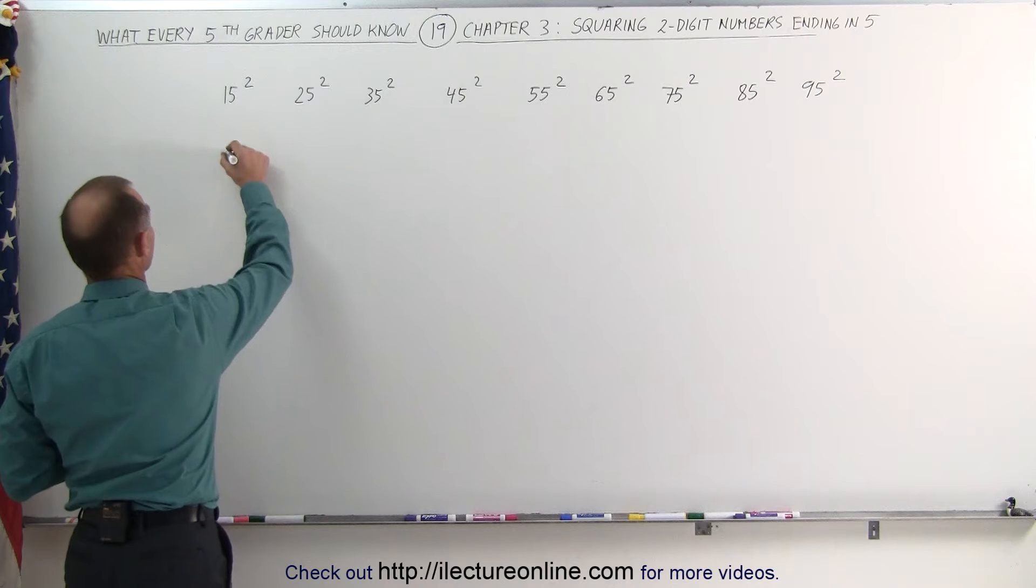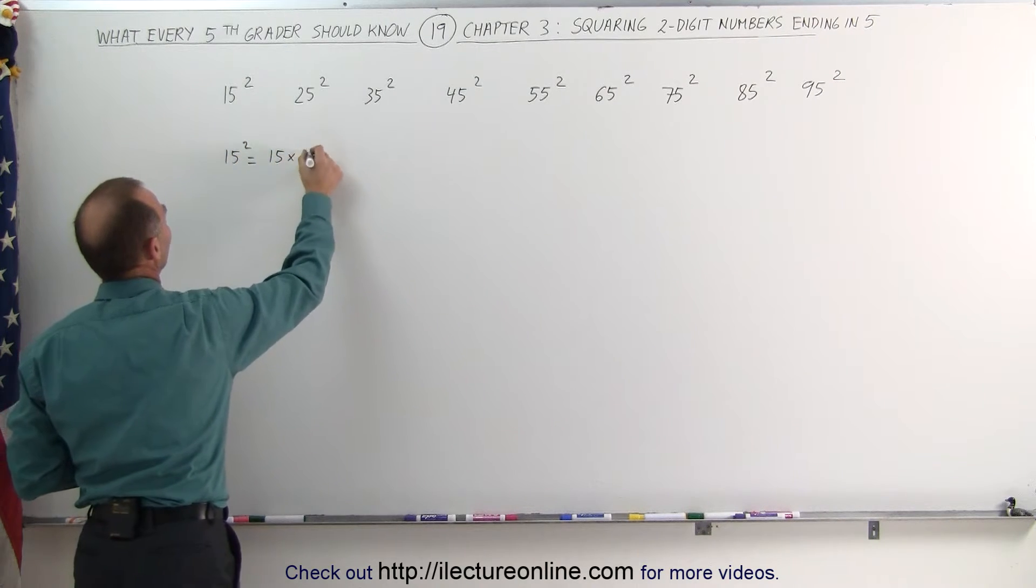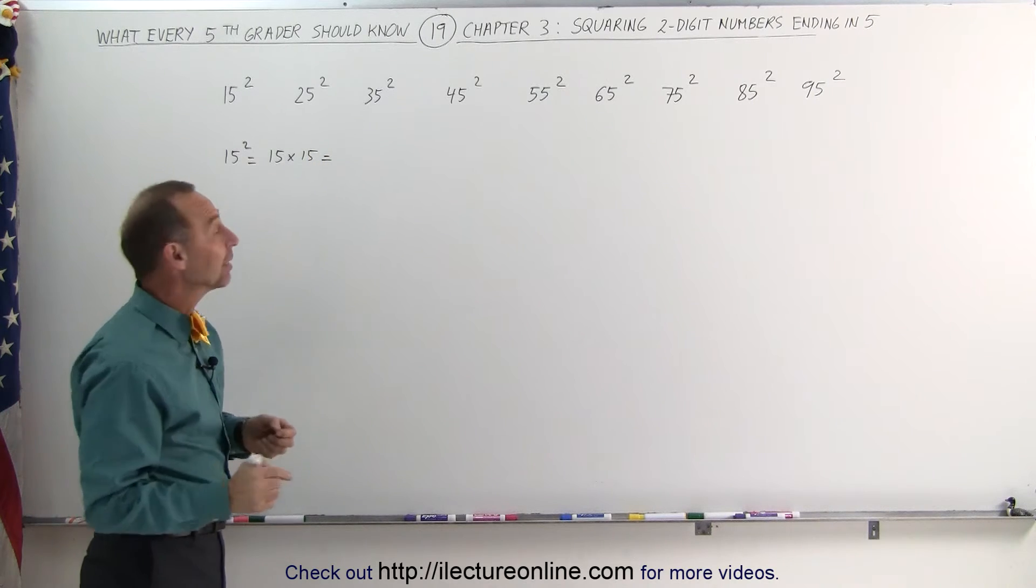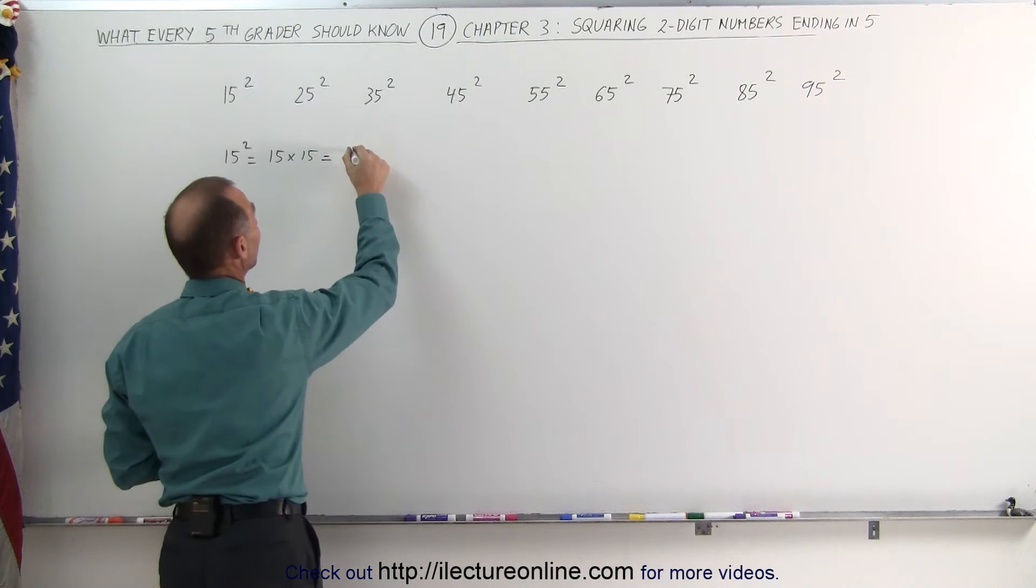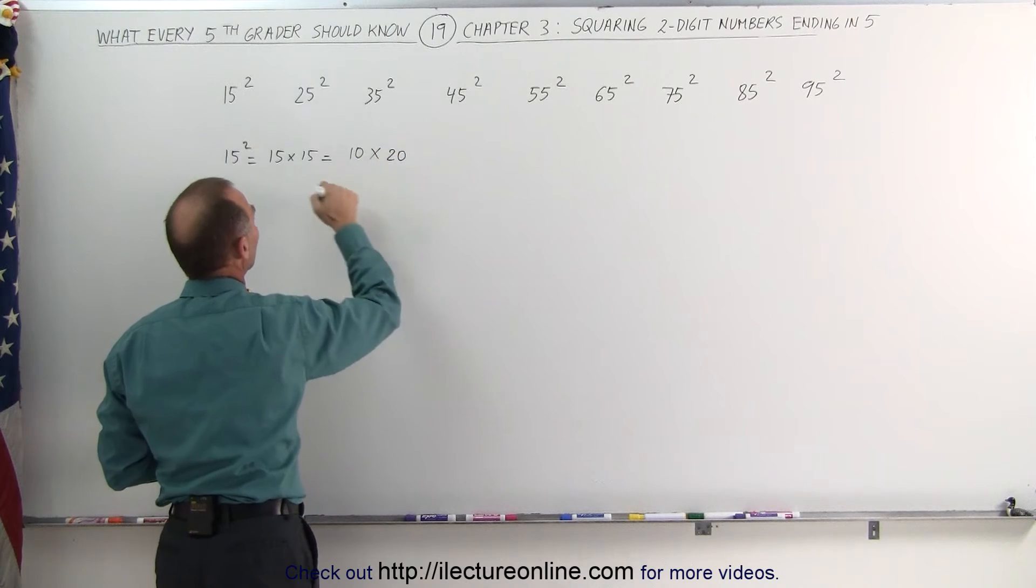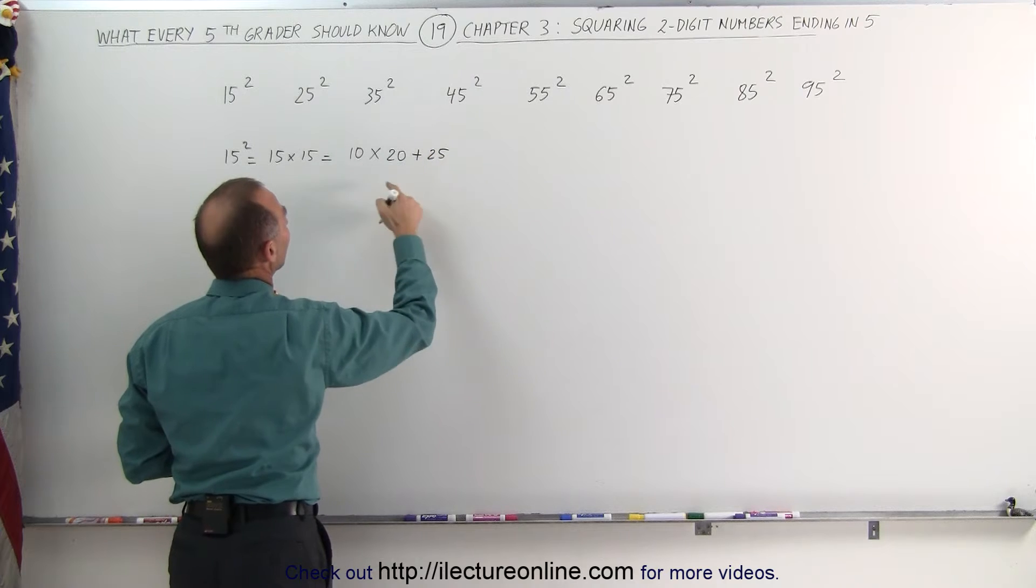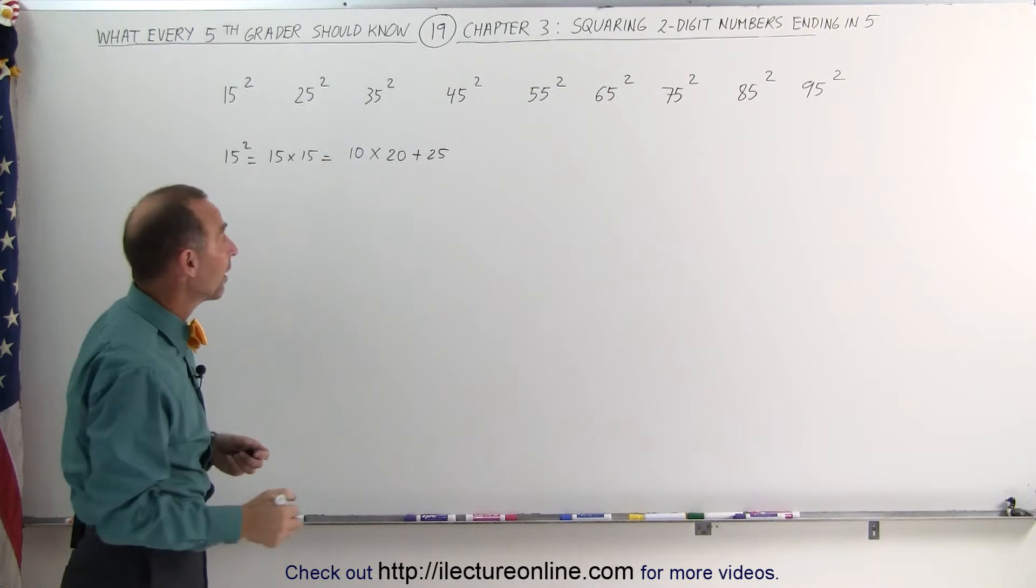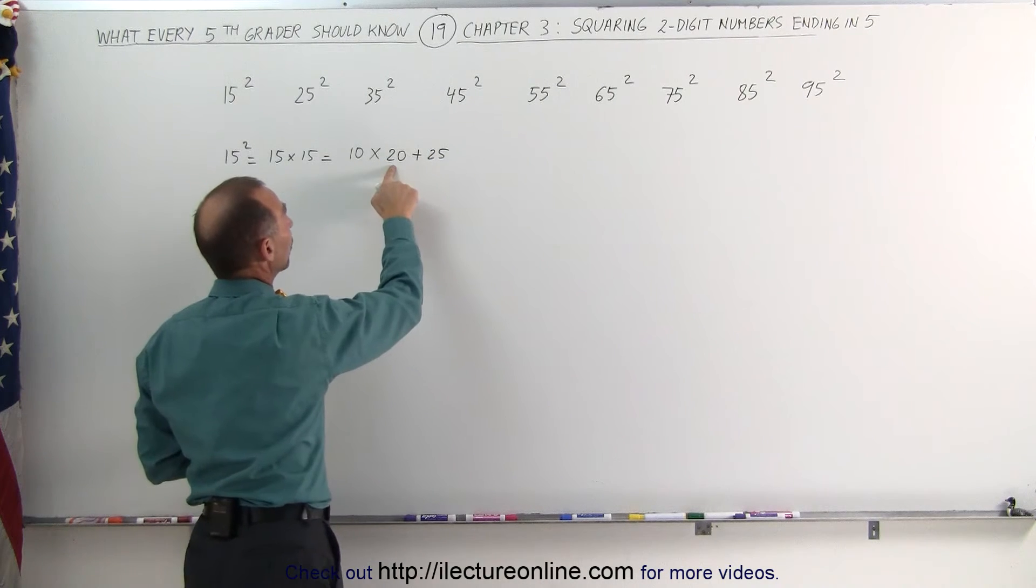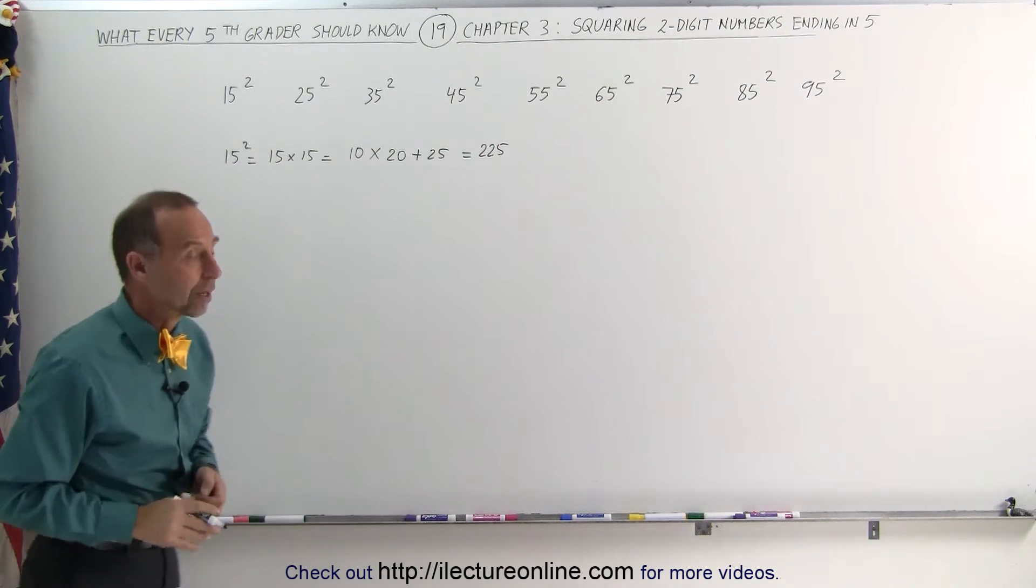15 squared is the same as multiplying 15 by itself, 15 times 15. And the way to do that is to first subtract 5 from that, so you get 10, and then add 5 to that, you get 20, so you end up multiplying 10 times 20, and then add 25 to that, because 25 is 5 times 5. So 10 times 20 is 200, plus 25 is 225, which is the same as 15 squared.